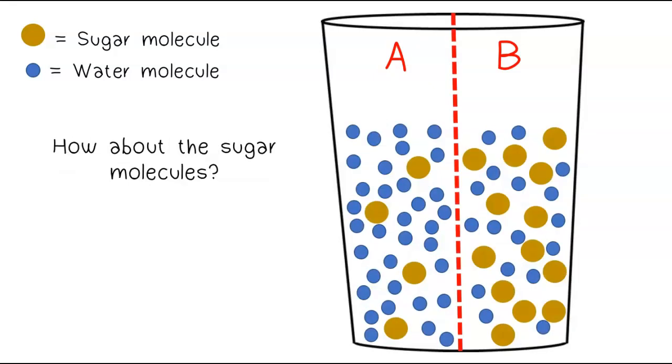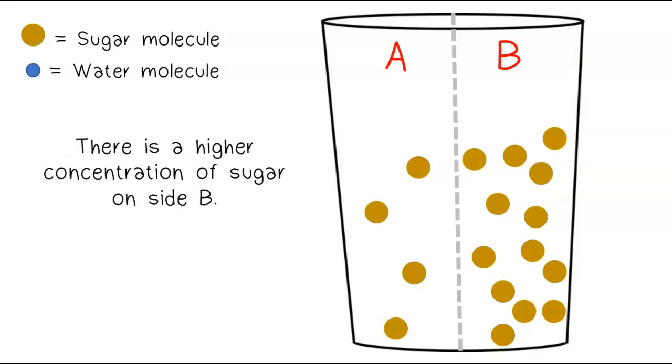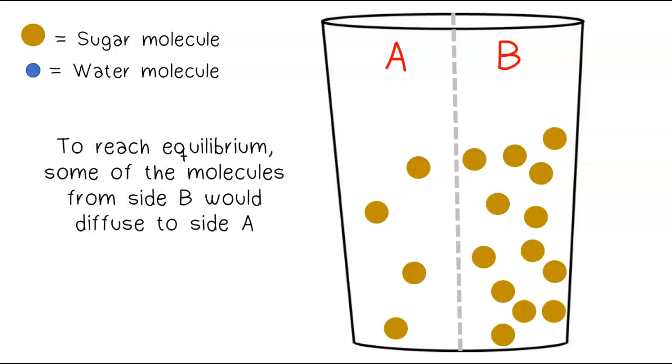How about the sugar molecules? There is a higher concentration of sugar on side B. To reach equilibrium, some of the molecules from side B would diffuse to side A.